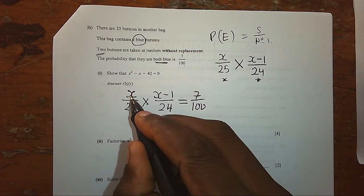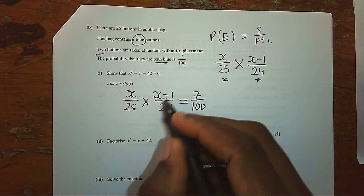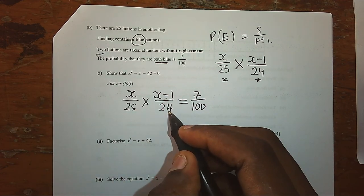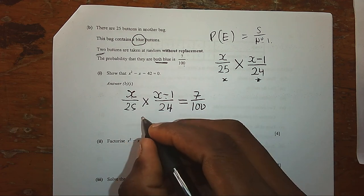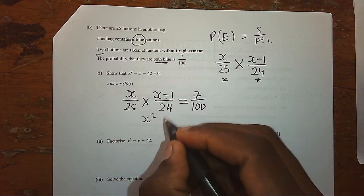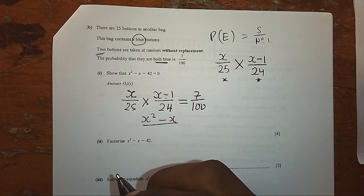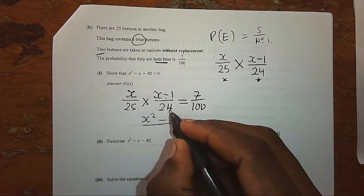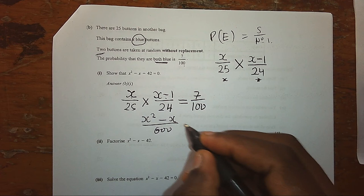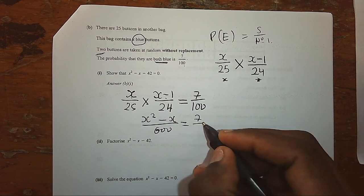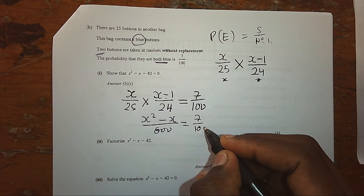How do you simplify this? We multiply the numerators and also we multiply the denominators. When we multiply the numerators, we shall come up with X² - X over 25 times 24, that is 600. This should be exactly the same as 7 over 100.